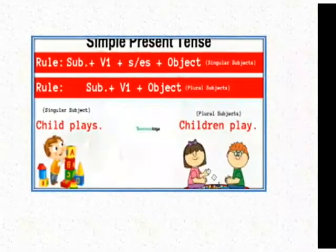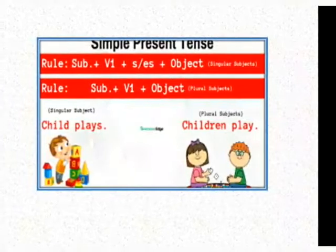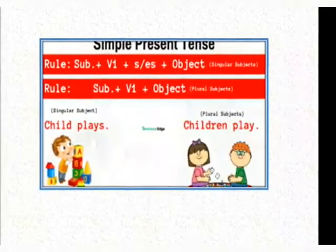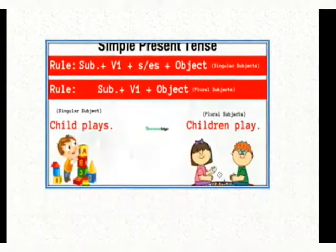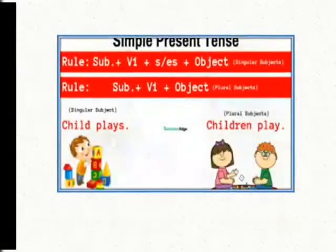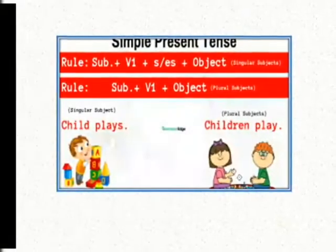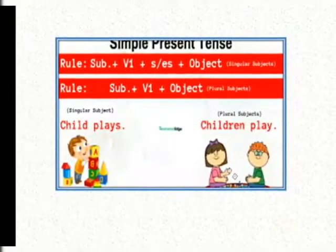For example: 'Child plays' — child is singular and the verb is play, so we add s. 'Children play' — because children is plural, we haven't added s or es with the verb play.